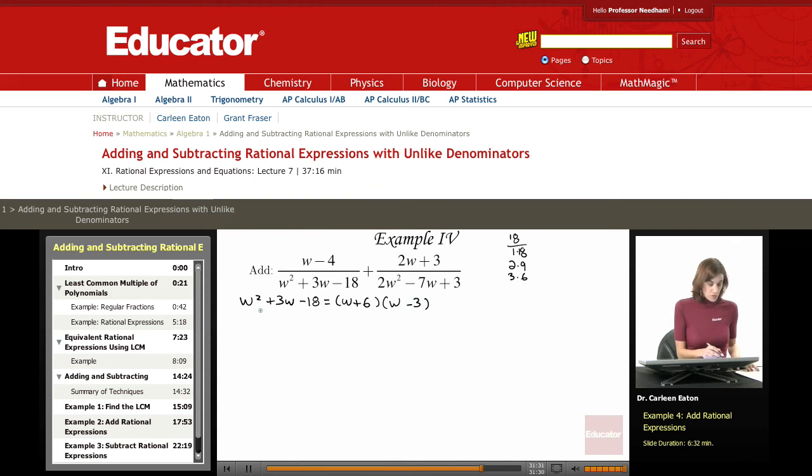First term, W squared. Outer term, that's negative 3W. Inner term, 6W. So, minus 3W plus 6W does give me a middle term of 3W. 6 times negative 3 is negative 18. So I have the factorization of that first denominator.